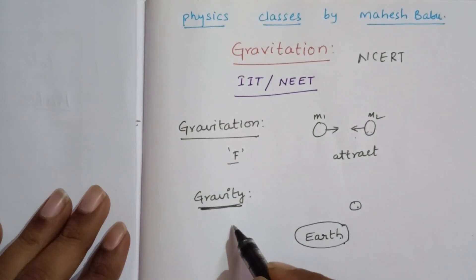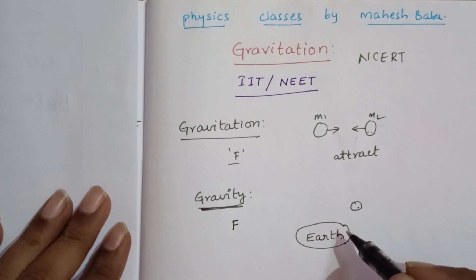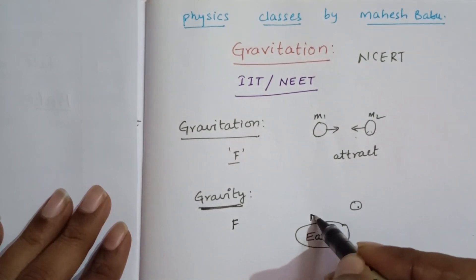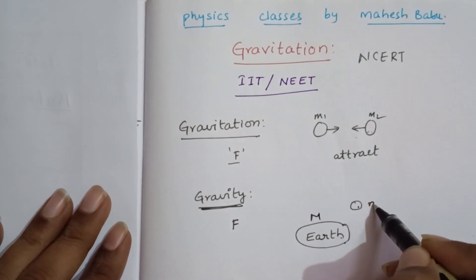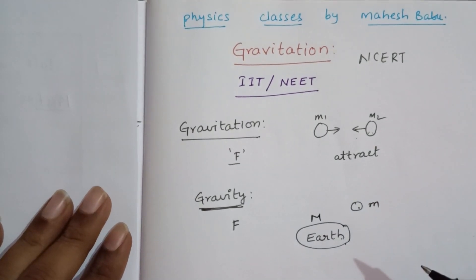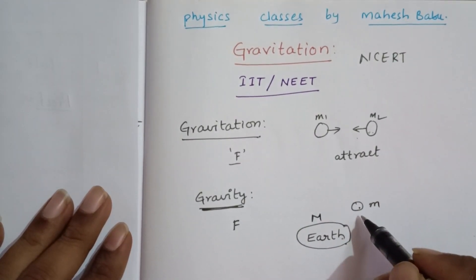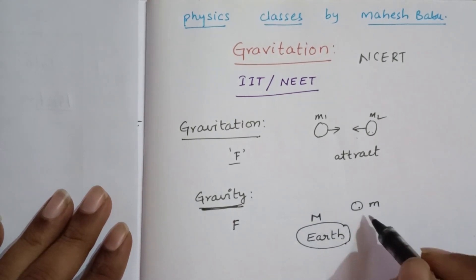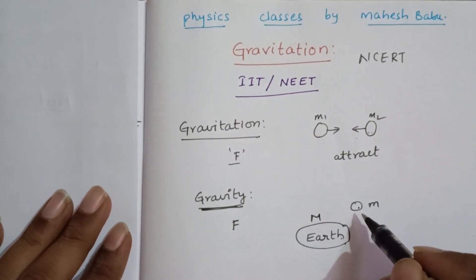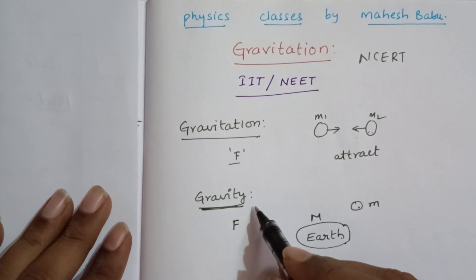Gravity is also denoted by the letter F. Here, the mass of the Earth is denoted with capital M, and the mass of the object is denoted with small m. The attracting force between Earth and any object on or near the surface of Earth is known as the force of gravity.